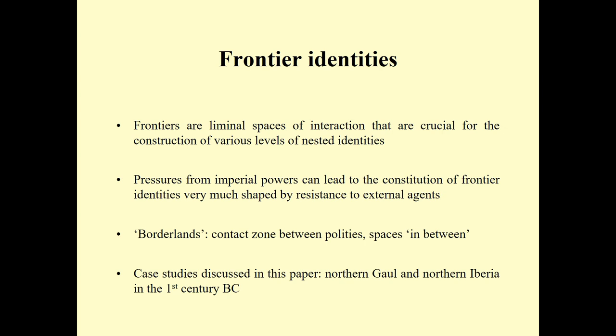For my case study, I'll be focusing on the pressure from imperial powers — in this case the expanding Roman Empire — that can play a major role in the construction of frontier identities very much shaped by resistance to these external pressures. What I'm dealing with here could be defined as borderlands: contact zones between different, asymmetrical polities — spaces in between that are in more or less direct contact with an expanding power for several generations, but also having dynamics of resistance against this power.